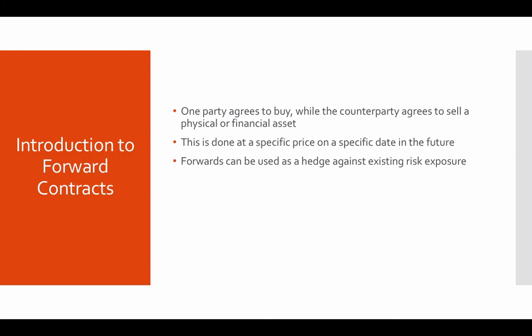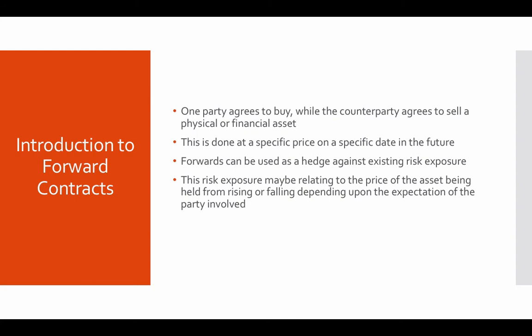The same goes for anybody — for instance, an oil trader. He would be worried about rising prices in oil and would want to hedge himself by purchasing oil through a forward price, where he sets his expectation and says he is going to buy it at a certain price. So what happens as a result is if the price really goes up, he ends up saving a lot of cost and covers himself effectively. The risk exposure may relate to the price of the asset being held rising or falling, depending upon the expectation of the party involved.